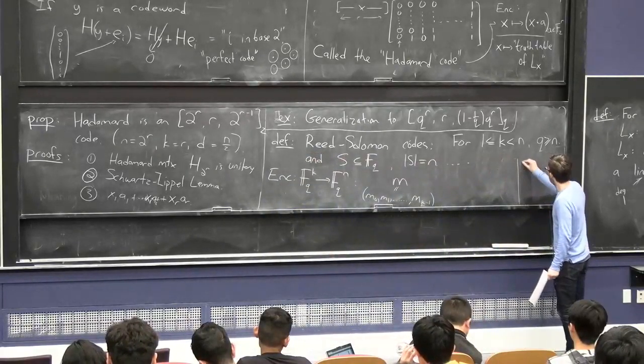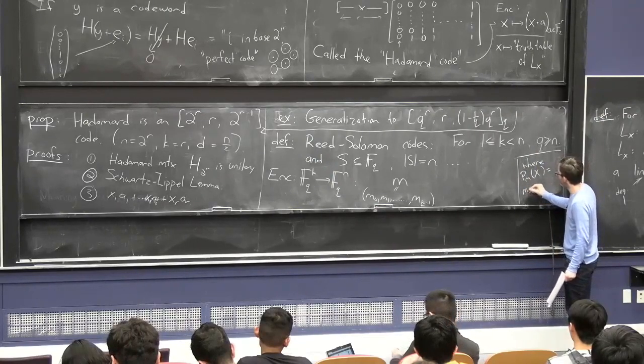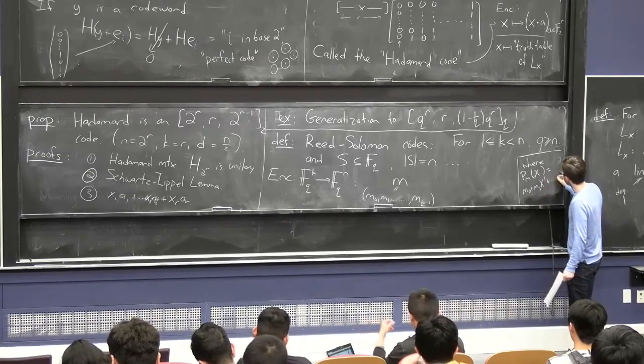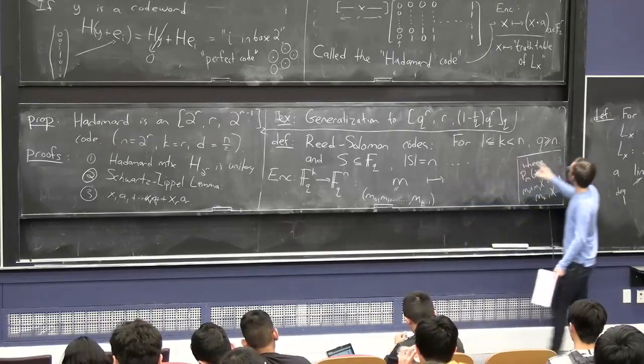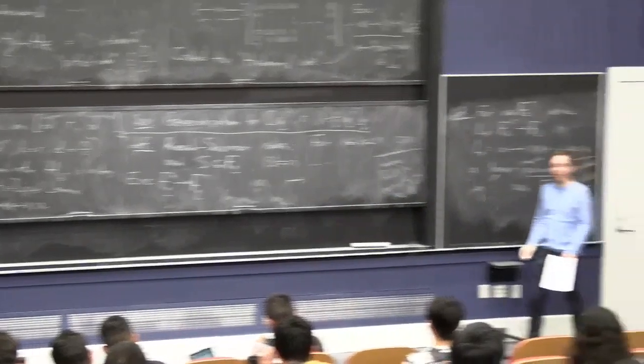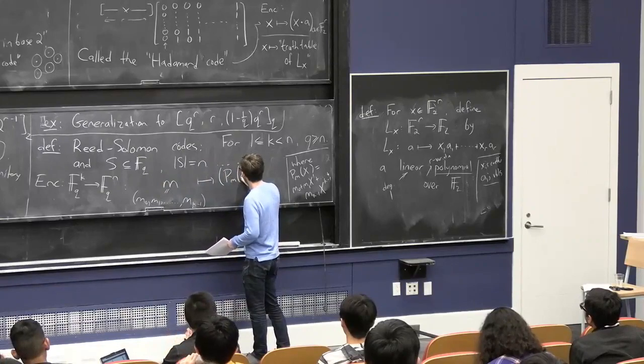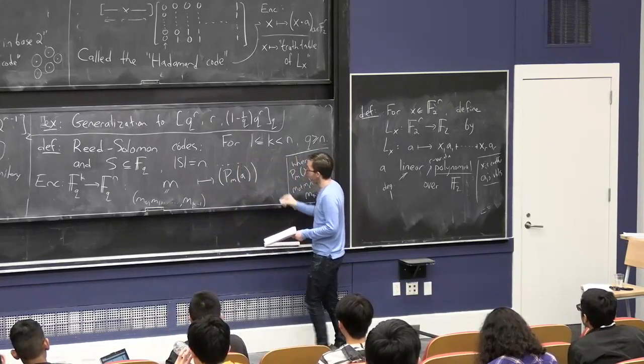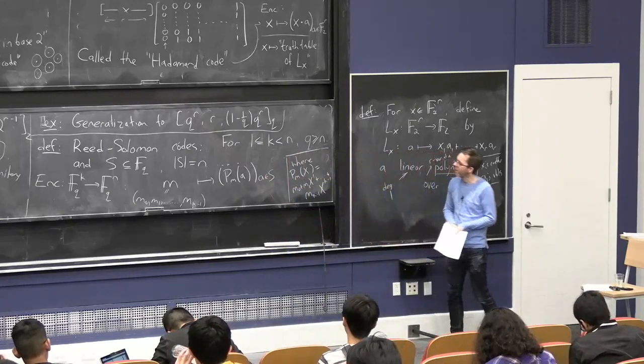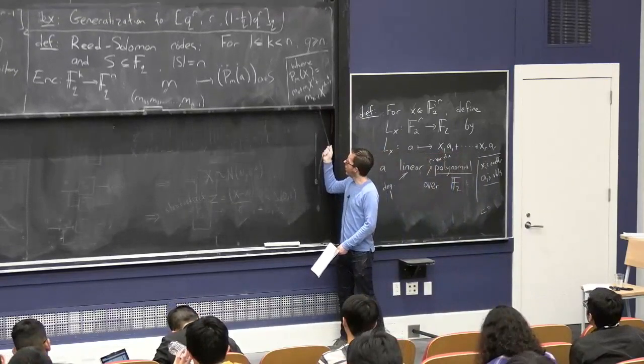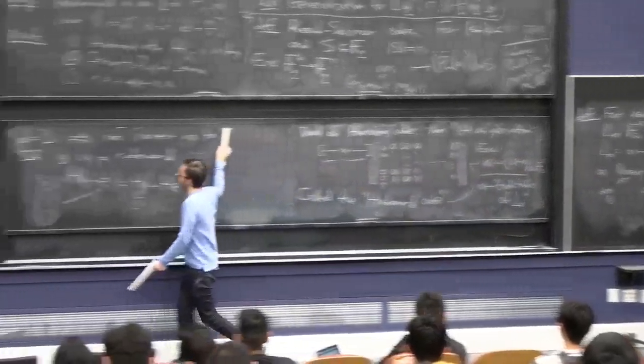Namely, the univariate polynomial whose coefficients are these symbols. Where p of m is the polynomial in x, the univariate polynomial that looks like m0 plus m1x to the 1, plus dot dot dot, plus mk minus 1, x to the k minus 1. And the encoding is just going to do the same thing that the Hadamard code did. Namely, it's going to output the truth table of this polynomial. Or at least it's going to output all the evaluations on the set S. So it's going to output this polynomial applied to all field elements in the set S in some fixed order.